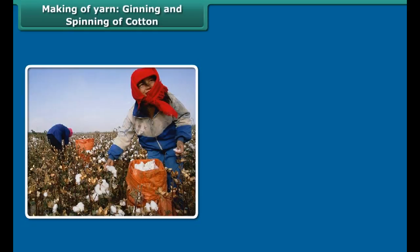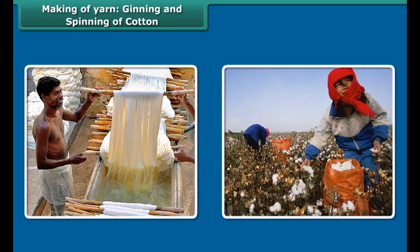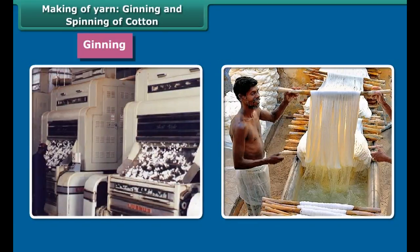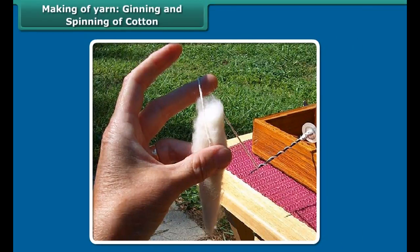How is fabric made from fiber? First, yarn is made from fiber, and then fabric is made from yarn. To make yarn, cotton is picked by hand from cotton bolls, and then fiber from the seeds is separated by combing. This is called ginning. Ginning can be done by machines too.